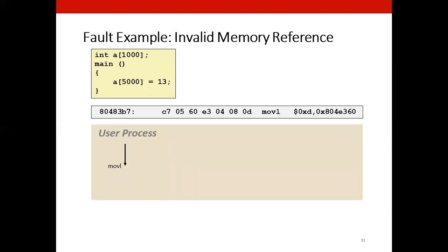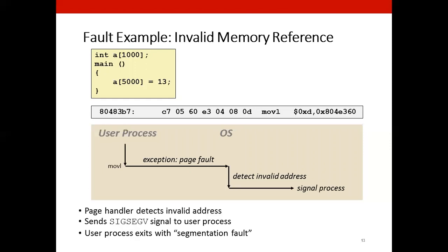This is our favorite move instruction here. And the program executes until it reaches this move instruction. And it leads to a page fault because that is not mapped. The operating system determines not only that the page is not mapped, but also that it is an invalid address. So what it needs to do is that it signals the process that unfortunately I will have to abort you. So it sends this SIGSEGV signal to the user process and the user process exits with segmentation fault.